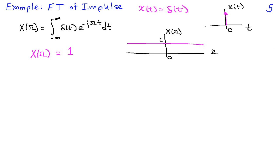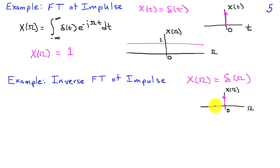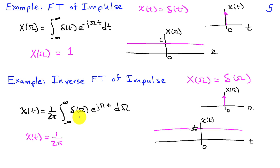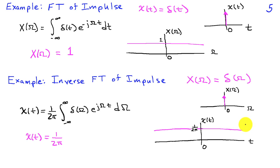We can also do the other case: an impulse in frequency, where all energy is concentrated at zero. Substituting into the inverse Fourier transform and using the sifting property — evaluating at the frequency where the impulse is located — we find the integral equals 1, giving 1 over 2 pi for x of t. So the ultimate narrow signal in frequency gives the ultimate wide signal in time. This shows the same duality we saw with rectangles and sincs: an impulse in time corresponds to a constant in frequency, and a constant in time corresponds to an impulse in frequency.